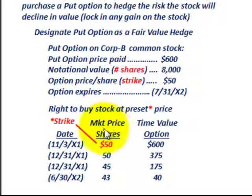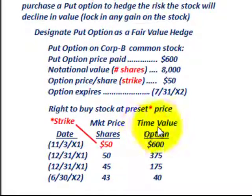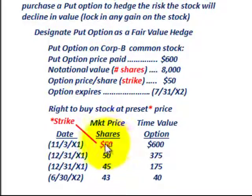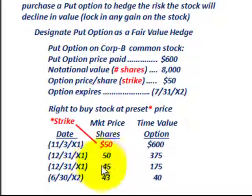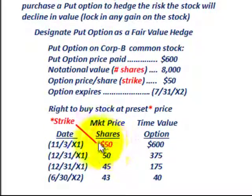With this put option, we have to break it down. We're given the market price per share — it's a decreasing market price over the dates we're looking at — and we also have the time value of the option. The strike price is $50, the price you can sell this stock at. So if the market price drops to $45 per share, you can buy it at $45 but sell it for $50 using the put option, making $5 per share profit.